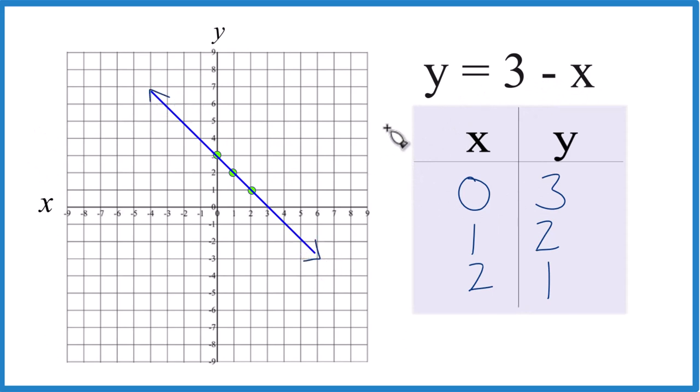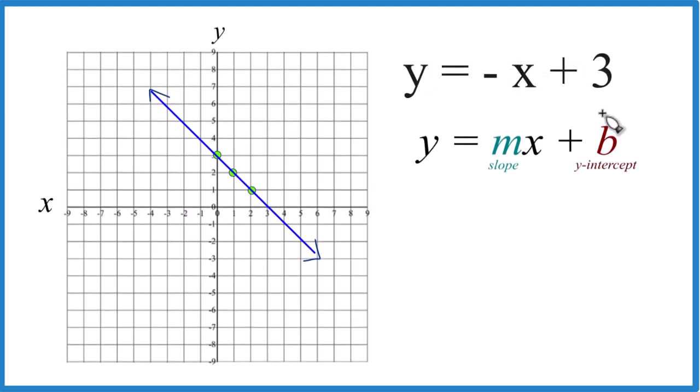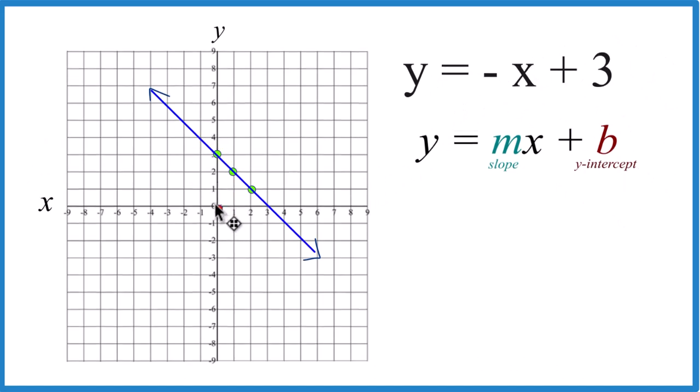Let's try this with slope-intercept form. So I want the x to be here up front, so I'm going to say y equals minus x plus 3. It's the same thing, but now I have my y-intercept right here, which is 3, so I can just go here and go up to 3 on the y-axis. There's my y-intercept.